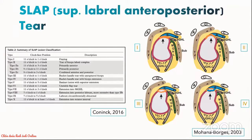As you can see from the table on the left, there are multiple classifications of SLAP lesions. You should only need to be familiar with the first four types. Type 1 is a plain fraying of the superior labrum. Type 2 is a simple tear of the biceps-labrum complex superiorly. Type 3 is the displaced bucket-handle tear. Type 4 is a bucket-handle tear as well but with biceps tendon extension.